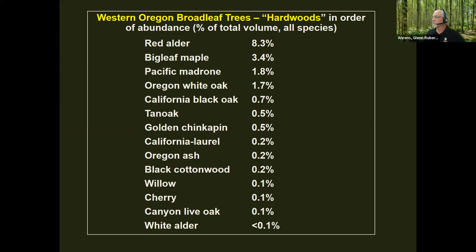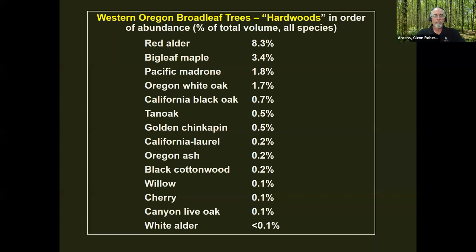Looking at broadleaf trees, this table — made about 20 to 25 years ago — shows forest inventory for all of Western Oregon. Red alder is actually the third most abundant tree in Western Oregon; Douglas fir is number one, western hemlock is number two — those two are close to 75% of total volume. Alder is a distant third at around 8% of the resource. Big leaf maple is second among hardwoods. Madrone, oak, black oak, tan oak, and chinkapin are all particularly abundant going further south in the state. Clearly alder is a very important one, and I'll start with that.